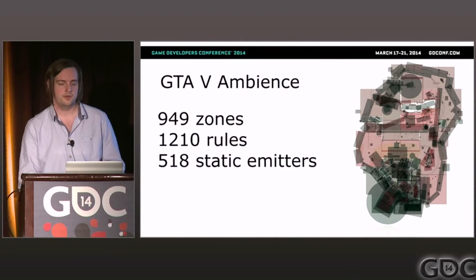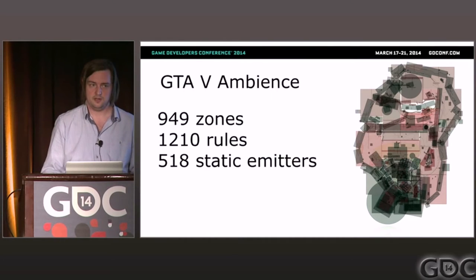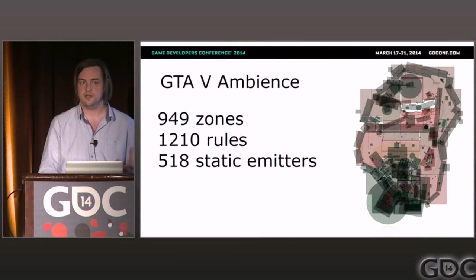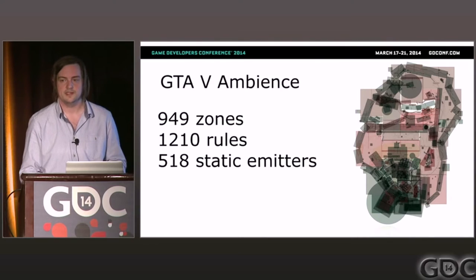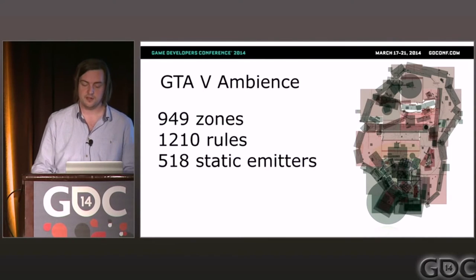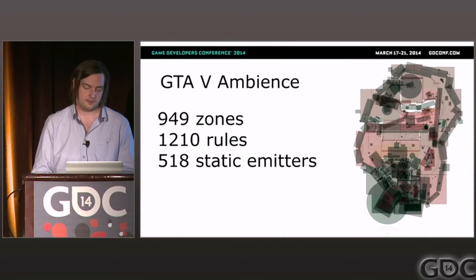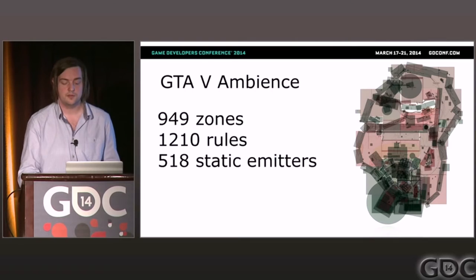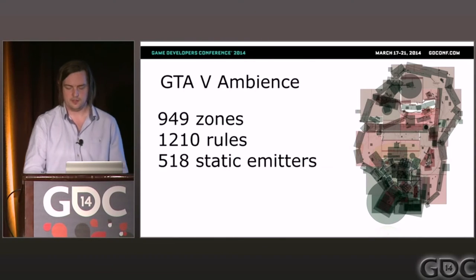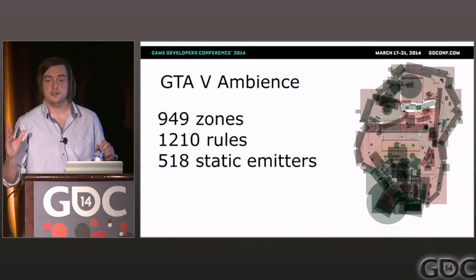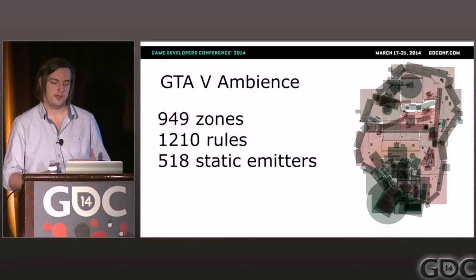We ended up with 11 times the number of zones, 21 times the number of rules, and two and a half times the static emitters. On GTA4 we used static emitters for a whole bunch of things, but on GTA5 they're only ever used for music placements or radio emitters. We also extended our zones to support different shapes and orientations — in GTA4 they were all axis-aligned boxes, but in GTA5 we support spheres and arbitrarily oriented boxes. We added support for more complex positioning systems, including sounds that track a line placed in the world — used for waterfalls and pipe systems — and a follow-listener mode where the sound is positioned at the listener if inside the zone, and at the nearest point on the zone boundary if outside.